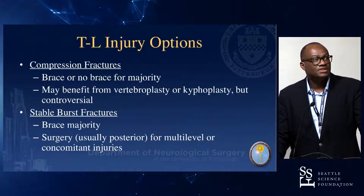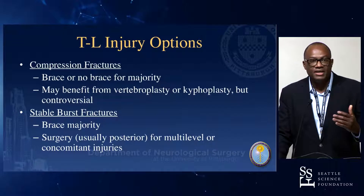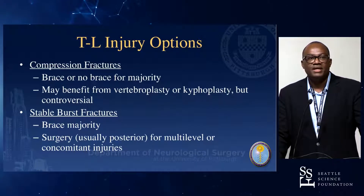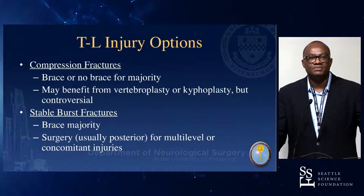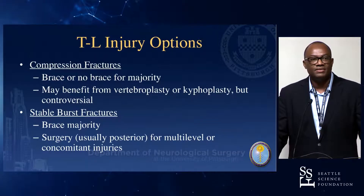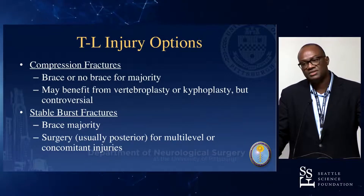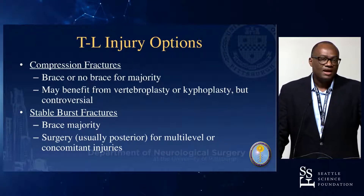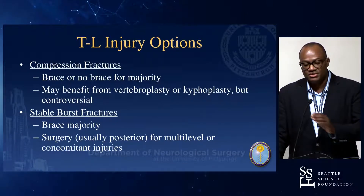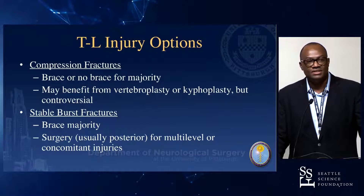Thoracolumbar injury options: compression fractures — brace or no brace for majority. Some attendings would not brace a compression fracture; some will. I always say, how frail is that patient? How morbidly obese? How active are they? And what are the circumstances of their trauma? I always say the idiocy meter of their trauma — where they're doing something I can't trust they wouldn't do again — then they need a brace to remind them.